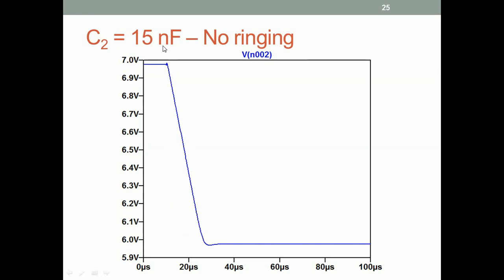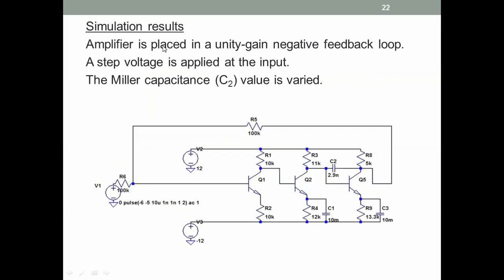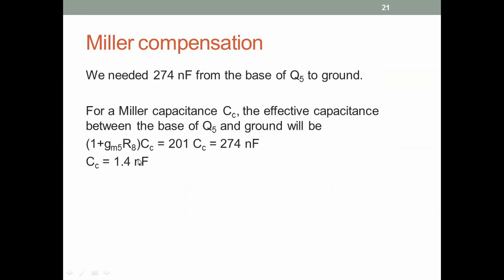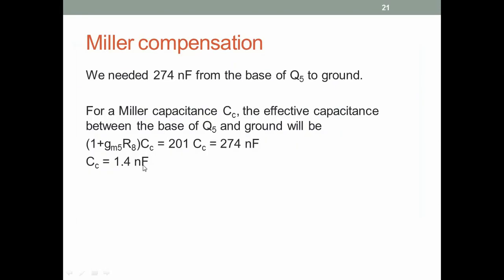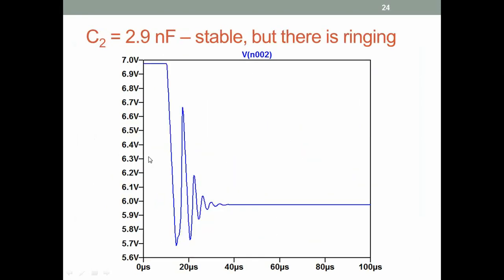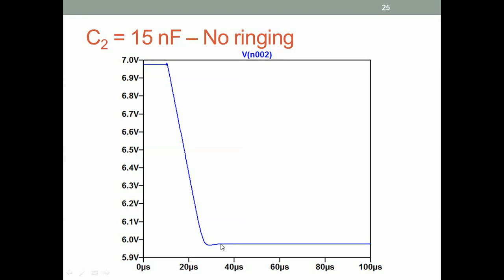Notice that 15 nanofarads differs from the calculated value of 1.4 nanofarads because many approximations were made in the analysis. There are too many approximations, so the calculated value is only a ballpark figure. Eventually one has to use Spice and tweak this number to get a nicely non-ringing stable output. For this specific circuit, the Miller compensation capacitor needed is 15 nanofarads.